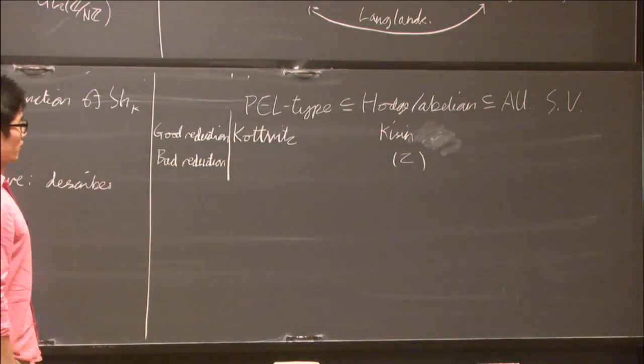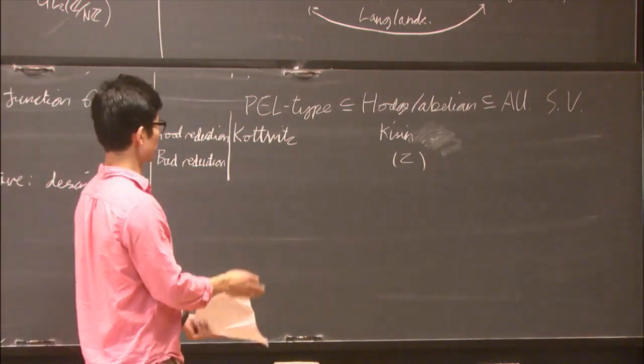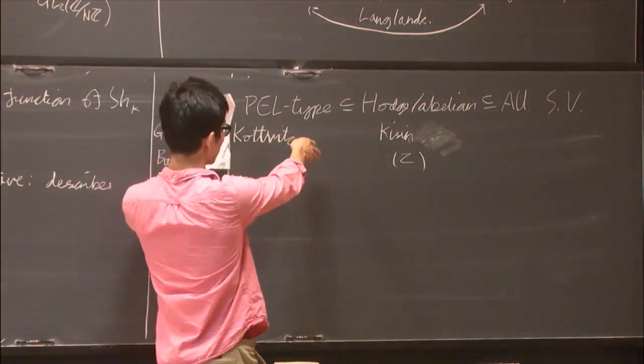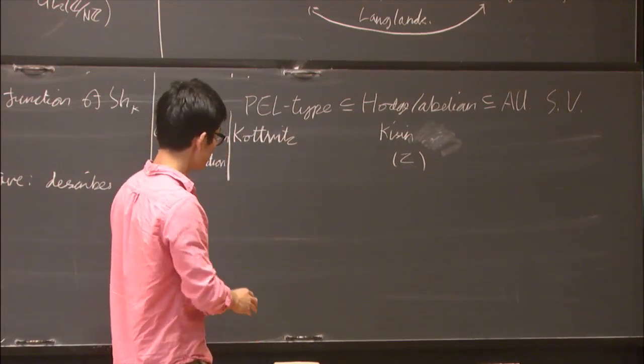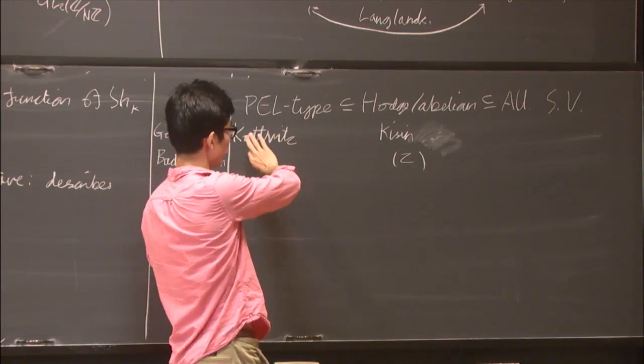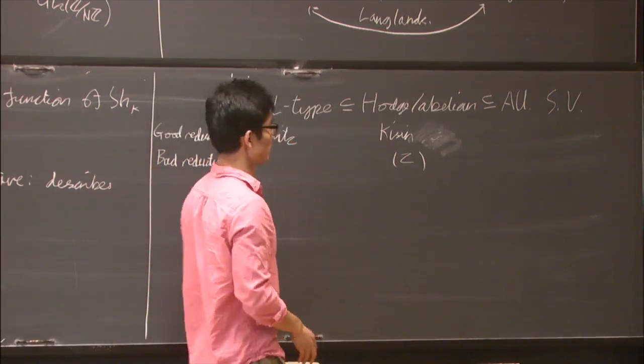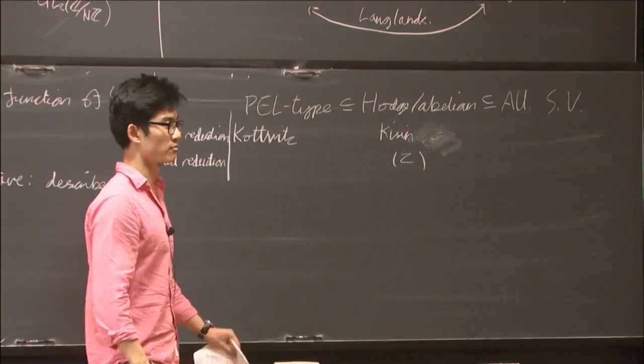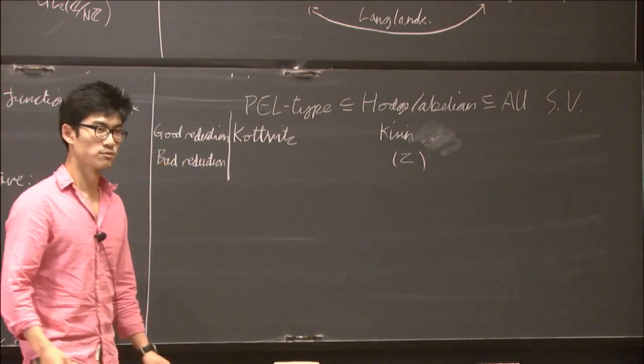That's something that I worked on. And in general, what I'm interested in doing as well - these PEL type Shimura varieties have been studied very extensively over the last few decades. I'm interested in seeing which results can generalize to Hodge slash abelian type Shimura varieties and also trying to find some arithmetic applications for these results. Thank you.